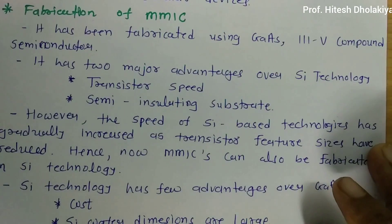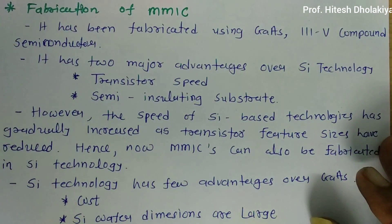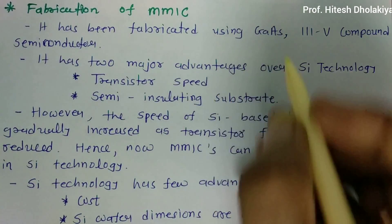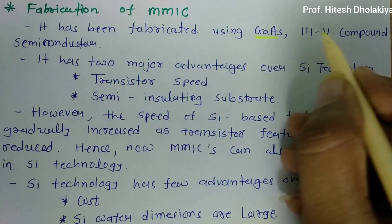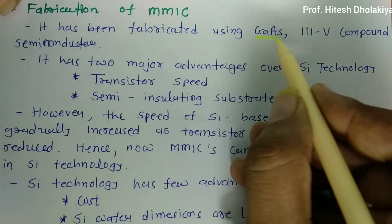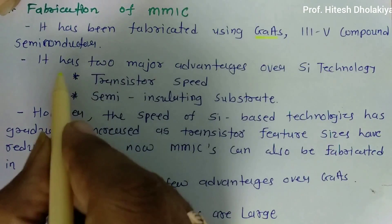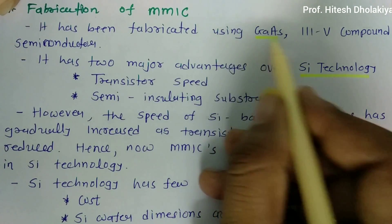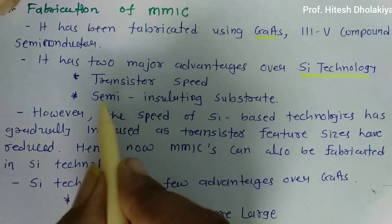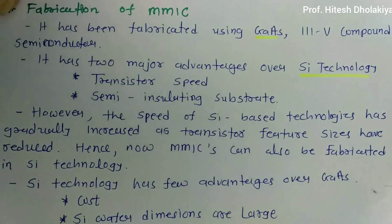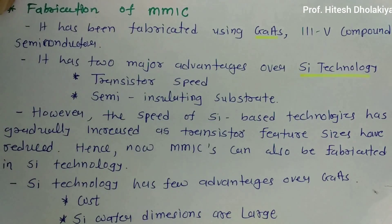Fabrication of MMIC was initiated with gallium arsenide — a Group III-IV compound semiconductor material. Gallium arsenide has two advantages over silicon technology: first, transistor speed of gallium arsenide is faster than silicon; second, it provides a semi-insulating substrate, which is very important in MMIC fabrication.